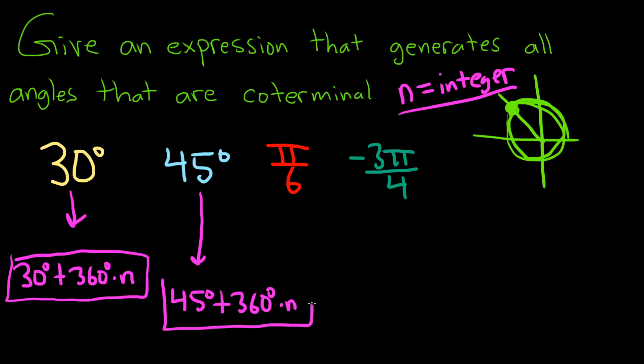Whenever you have degrees, to generate all angles that are coterminal, you just add 360 times an integer n. You can use any letter, like k if you want. I just decided to use n.